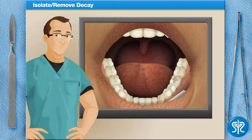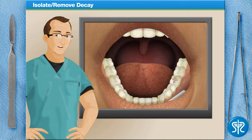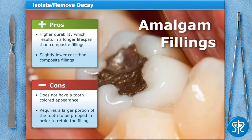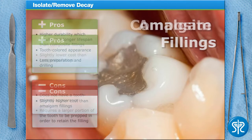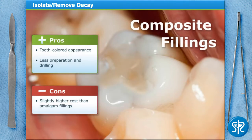Now that the decay has been removed, we need to figure out which type of filling our patient wants: amalgam or composite. Both have their advantages and disadvantages. Amalgam fillings are more durable than composite, but they don't have a tooth-colored appearance like composite fillings, and they often require a larger portion of the tooth to be prepared in order to retain the filling. Composite fillings are much more aesthetically pleasing and require less drilling than amalgam, but they can be a bit more expensive.